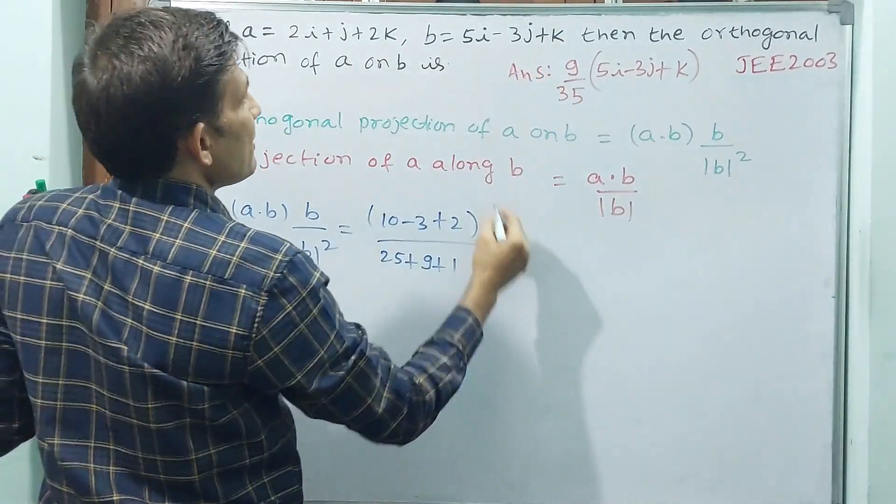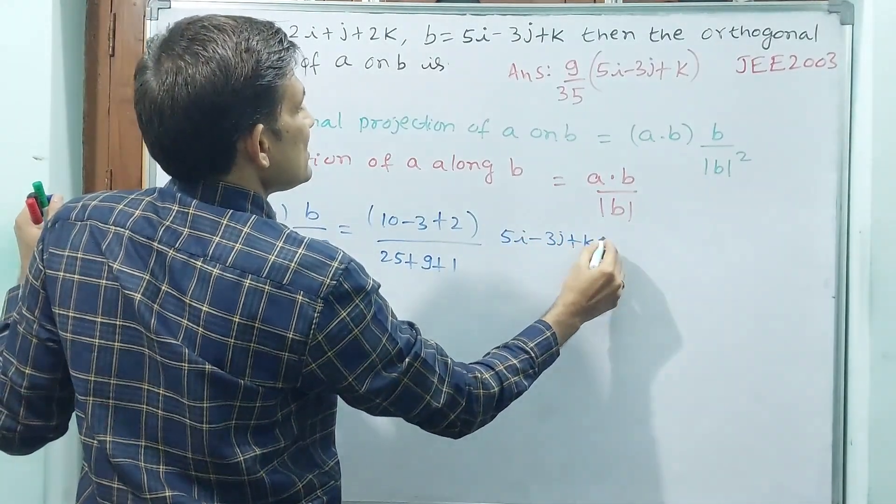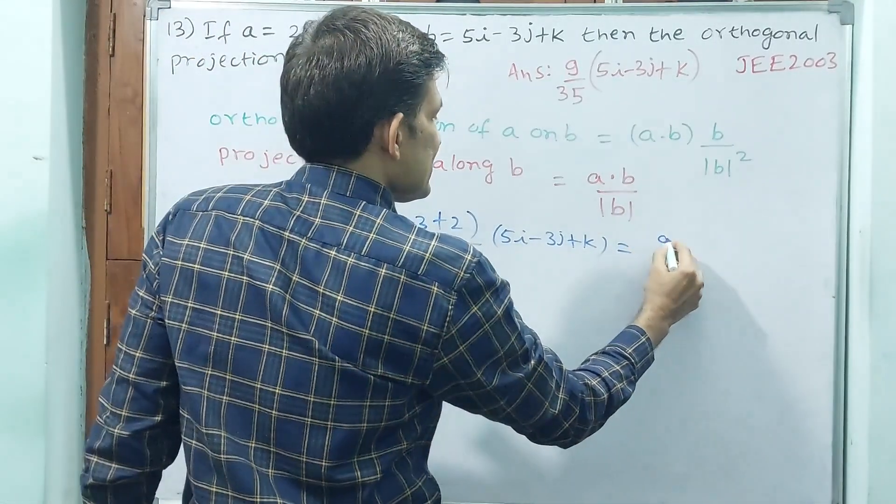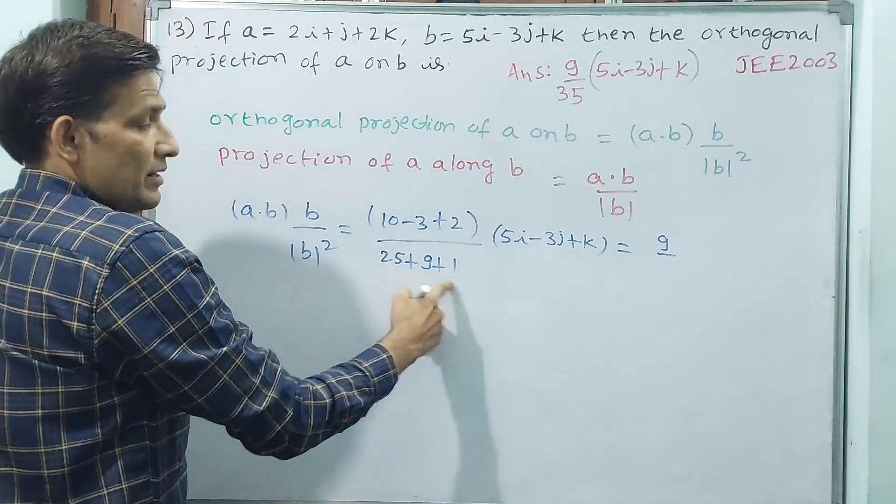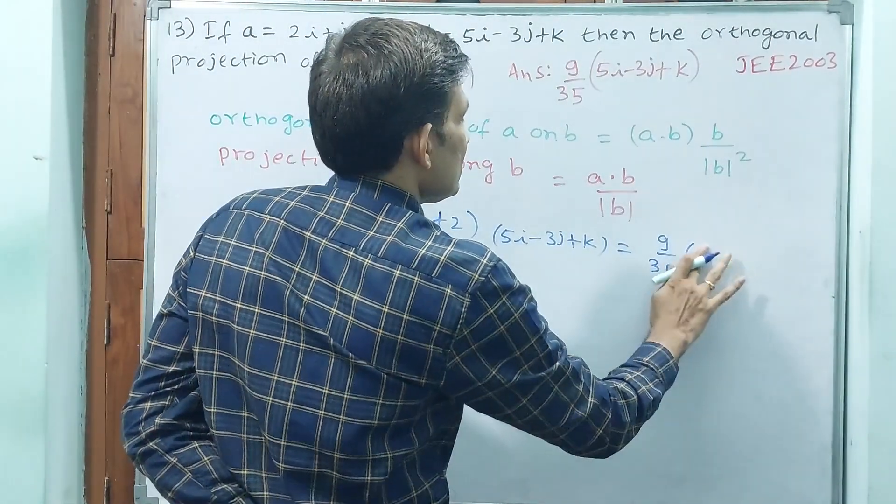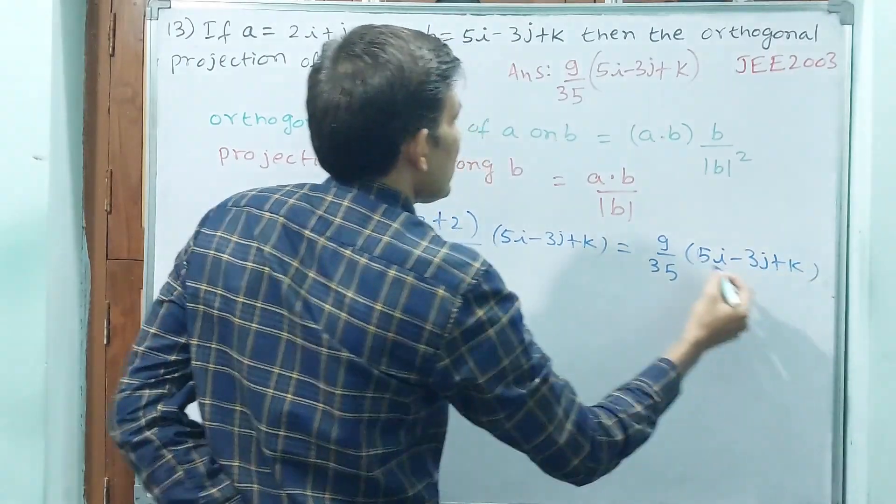Now again you write B. B same you repeat, 5i minus 3j plus k. That is equal to, see, 12 minus 3, 9, 35, 5i minus 3j plus k. Is this the answer? 9 by 35, 5i minus 3j plus k.